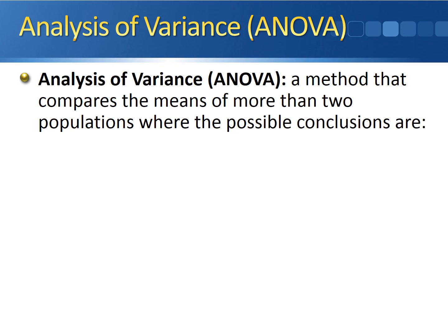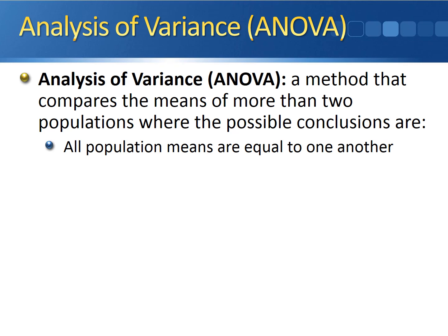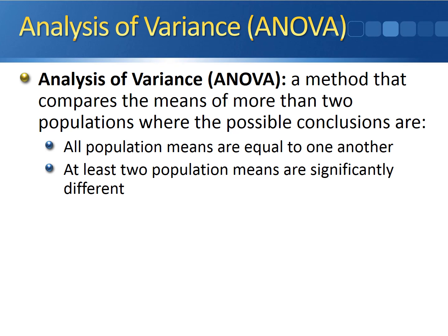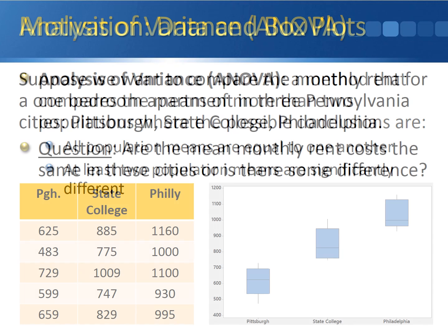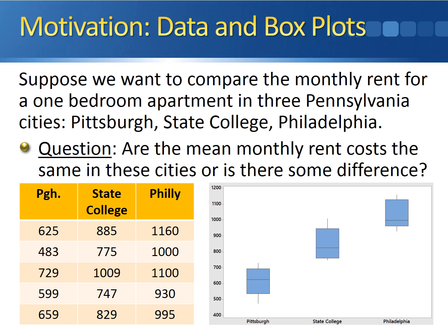ANOVA is a statistical method that compares the means of more than two populations, where the possible conclusions are that all population means are equal to one another, or at least two of the population means are significantly different. Let's take a look at the data and some box plots to get a feel for the information that we're working with.